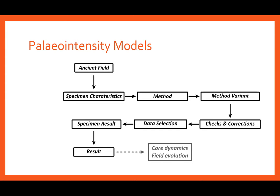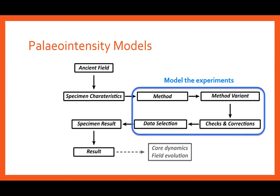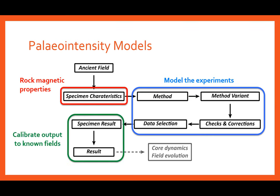The process of obtaining a paleointensity result can be used as a filtering process. Each stage — from the recording of the field to the experimental methods used, variations of the protocol, and their checks — all filter behavior observed in the final result. What the paleointensity models can do is model the experimental choices made in an experiment. The models can also be inputted with a large amount of rock magnetic properties that make up the specimen characteristics, such as domain state, mineralogy, and hopefully in the future, alteration. The models simulate the process of running the experiment and analysis, from which we can look at the results.